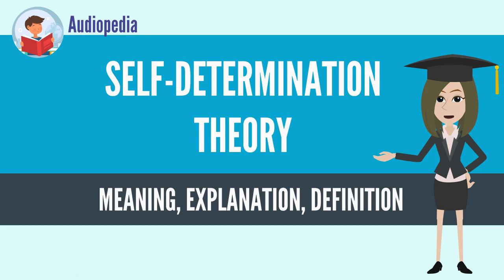In the 1970s, research on SDT evolved from studies comparing intrinsic and extrinsic motives, and from a growing understanding of the dominant role intrinsic motivation played in an individual's behavior. It was not until the mid-1980s that SDT was formally introduced and accepted as a sound empirical theory. Research applying SDT to different areas in social psychology has increased considerably since the 2000s.